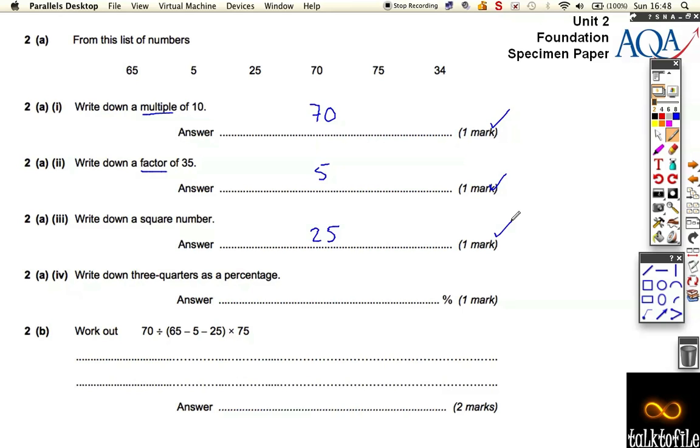We need to write down three quarters as a percentage. That's just 75 percent. Now we need to work out this calculation.